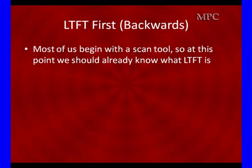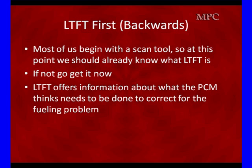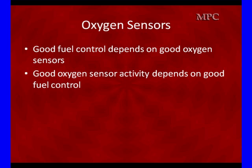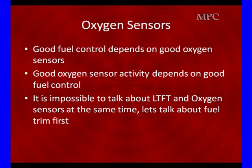Most of us begin with a scan tool, so we're going to use what we should already know about long-term fuel trim. Long-term refers to information the PCM thinks is needed to correct for a fueling problem. Total fuel trim is a combination of long-term and short-term. Oxygen sensors are not an island — good fuel control depends on good oxygen sensors, and good oxygen sensor activity depends on good fuel control. The two are almost married together.